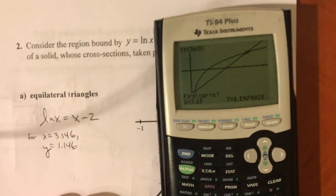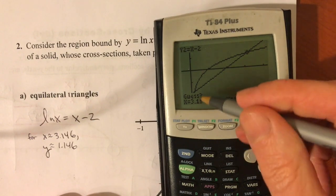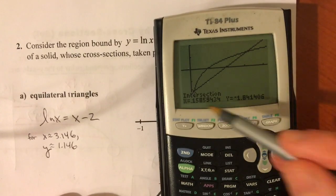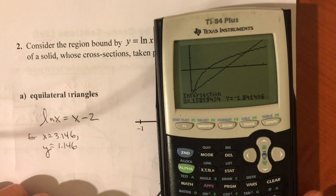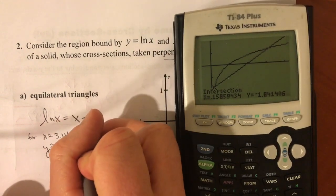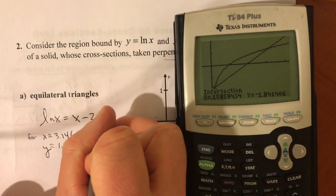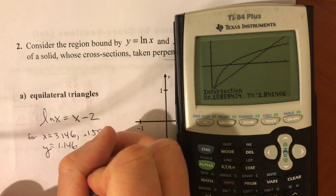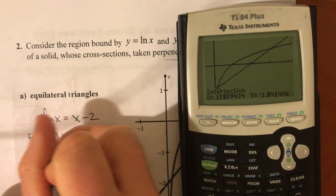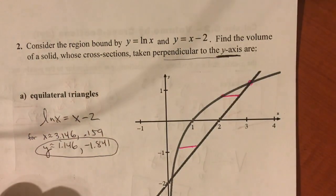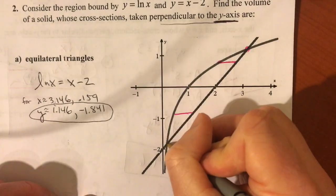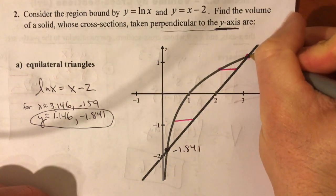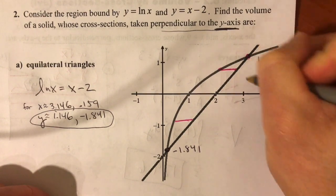So second trace, intersect, enter, enter, I want to go to this one. So you either scroll or you just guess a value that's close to there. It's definitely closer to zero. They intersect when x is about 0.159, even though we're really after that second y value, which is about negative 1.841. That right there is negative 1.841, this one right here is 1.146, so it was not right at 3.